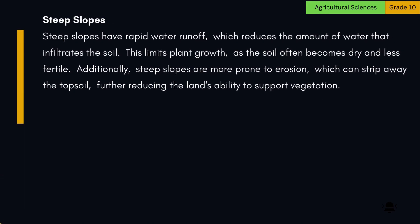Steep slopes have rapid water runoff, which reduces the amount of water that infiltrates the soil. This limits plant growth, as the soil often becomes dry and less fertile. Additionally, steep slopes are more prone to erosion, which can strip away the topsoil, further reducing the land's ability to support vegetation.